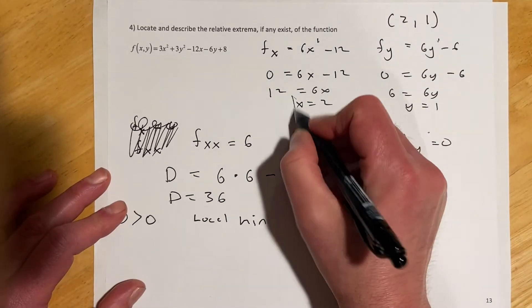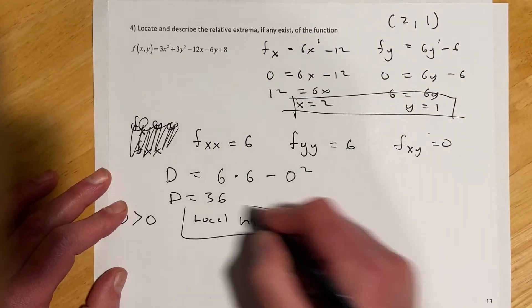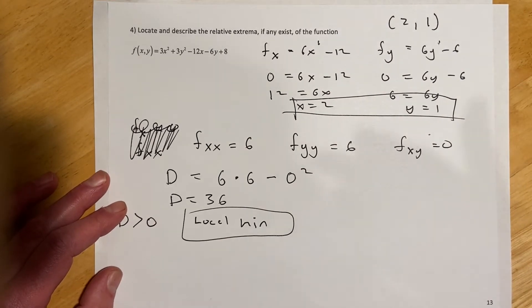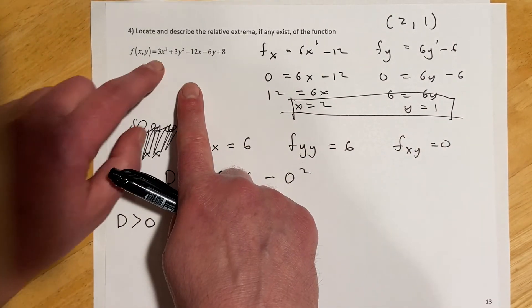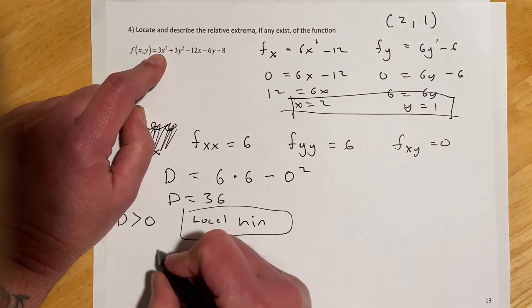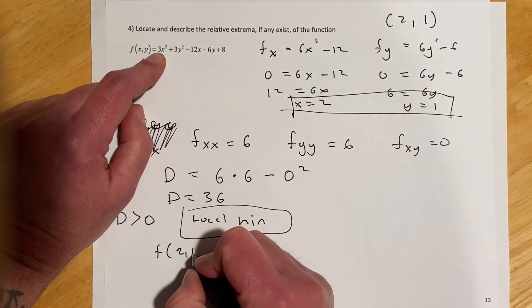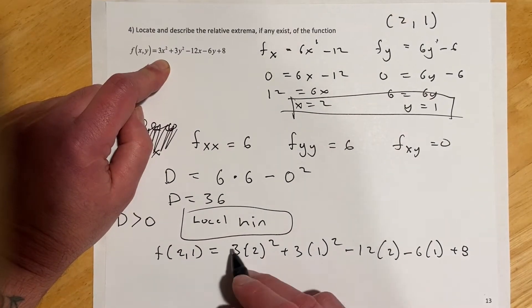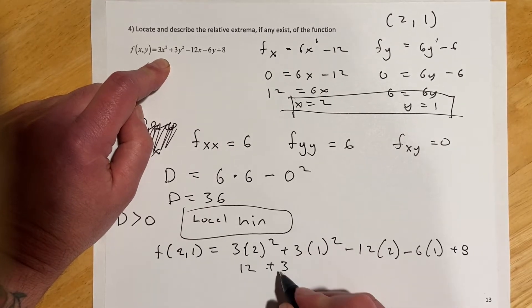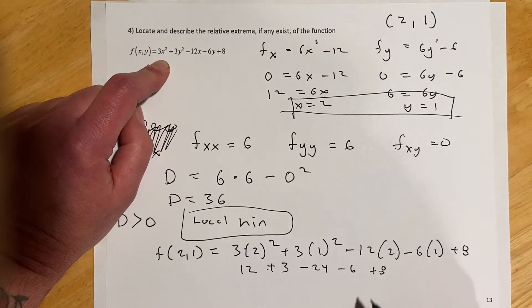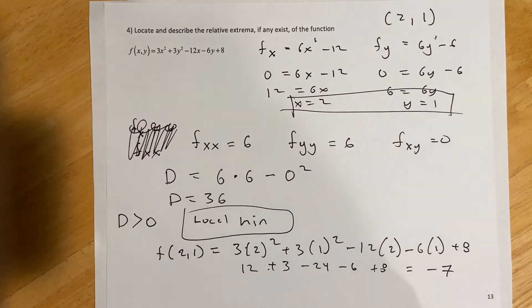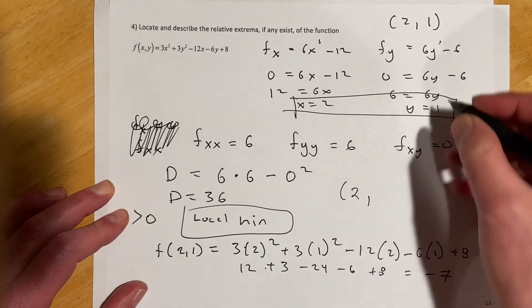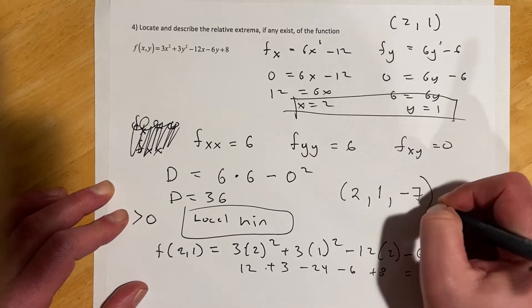On the homework it has you enter the critical value, pick local min or max, and then asks what the value is. We know x = 2 and y = 1, so we plug those into the function to find z. Evaluating f(2, 1): 2 squared is 4 times 2 is 12, then 3 minus 24 minus 6 plus 8 gives negative 7. So this local min occurs at x = 2, y = 1, z = -7.